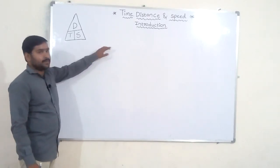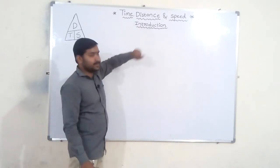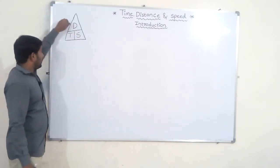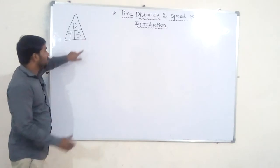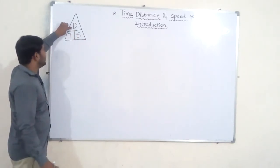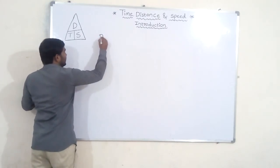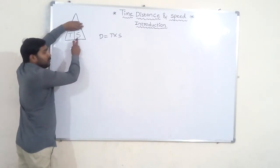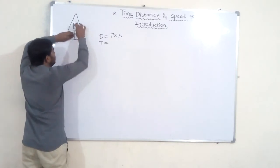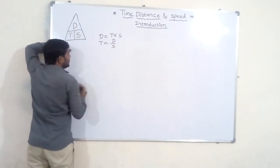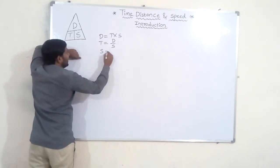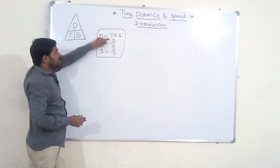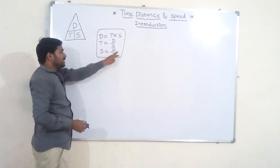Hi friends, in this video we will discuss the introduction part of time, distance, and speed. We know the relationship between distance, time, and speed. Distance equals time into speed. Time equals distance by speed. Speed equals distance by time.